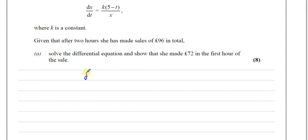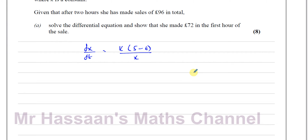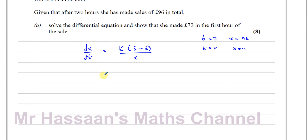So first of all we've got dx/dt = k(5 − t)/x. We need to solve this differential equation. We know that when t = 2, x = 96. We also know that when t = 0, x = 0, because at the time she starts she hasn't made any sales. So we know these bits of information and we need to solve this differential equation.